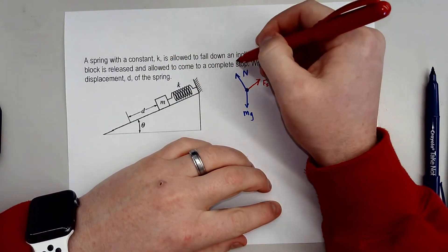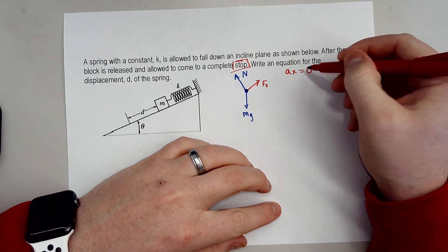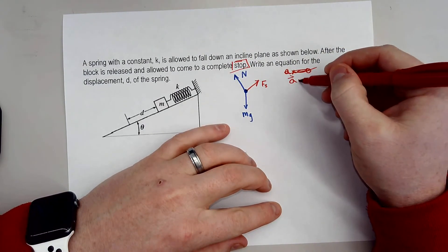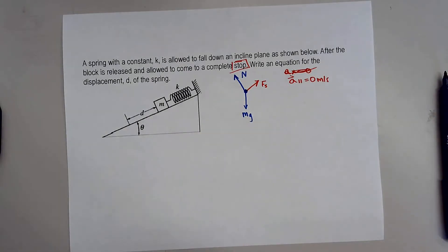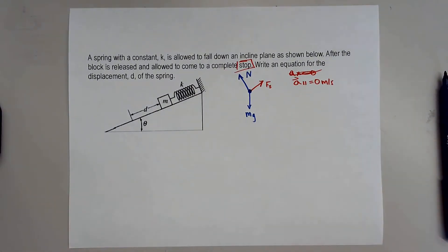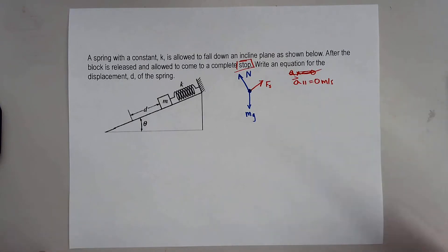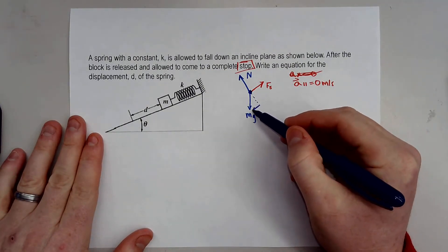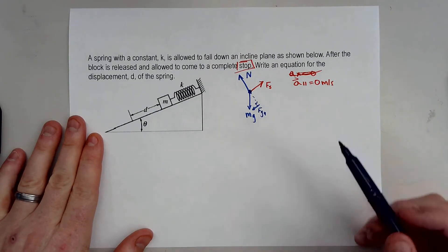This is interesting because when it says come to a complete stop, that means the acceleration in the system, or I should say the acceleration parallel to the ramp, needs to be zero. So this system is not going to move. So now we need to understand that there has to be something pulling this object down the ramp. Well that's actually the gravitational component of this mg right here.